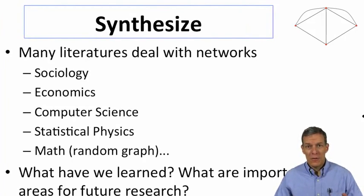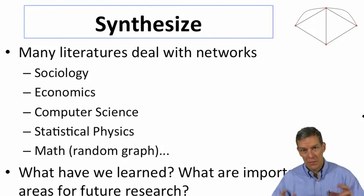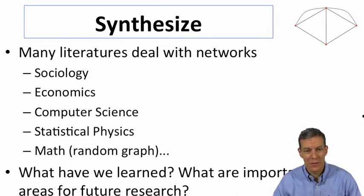Now, this is an area which has been researched in many different disciplines. When we look at the literature, there's sociology, economics, computer science, statistical physics, mathematics, random graph theory. What we'll do here is try and synthesize some of these and bring together a unified viewpoint, pulling models from different perspectives and trying to understand what we've learned and also what are important areas for future research as we go along.